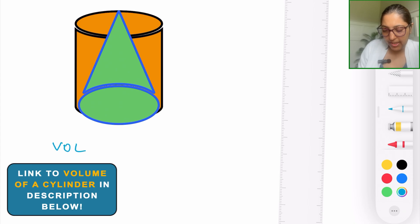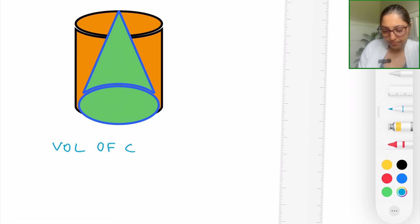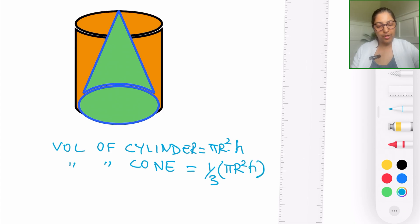So the volume of a cylinder we had learned is given by pi r squared times h. Now I will do the same thing. I'm using double quotes to mean it is the same shape. Volume of a cone is given by one-third of pi r squared h.